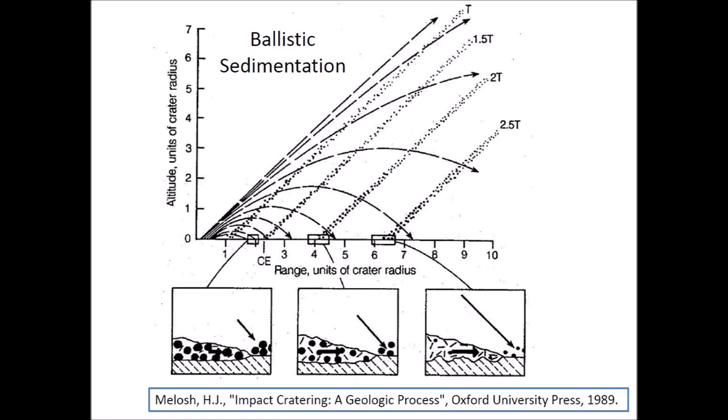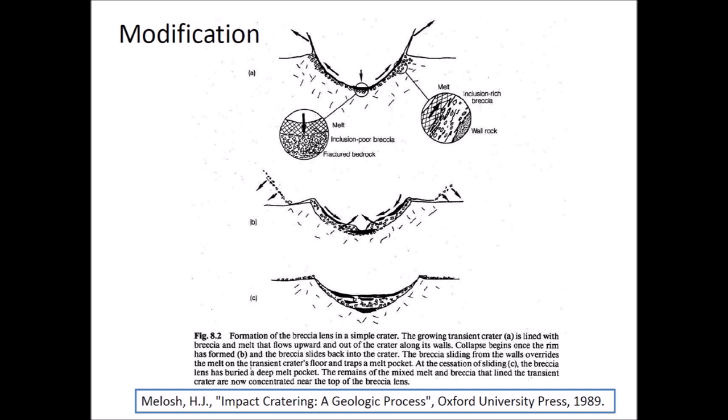Large, heavier material falls closer to the impact point and small, lighter material falls further away. The growing transient crater is lined with broken and molten rocks that flow upward and out of the crater along the crater walls. The modification phase starts after the crater has reached its widest diameter and material starts falling back into the crater, accumulating a pool of broken and molten rocks at the bottom.